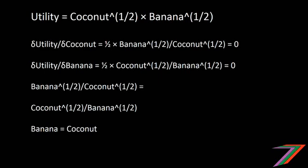The optimal number of coconuts and bananas for Robinson Crusoe turns out to be the same. So, for example, you would choose five coconuts and five bananas over seven coconuts and three bananas. We can actually prove that using the following table.